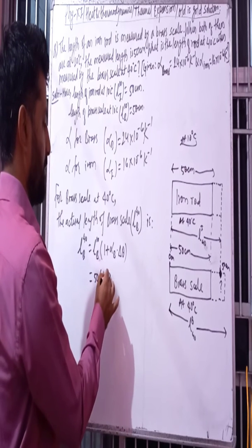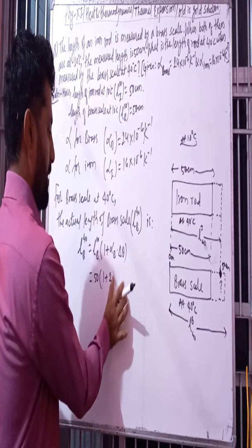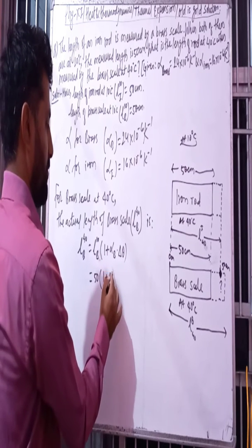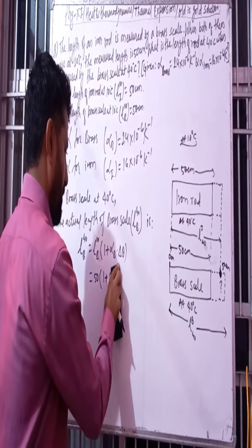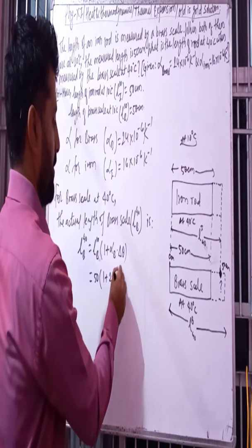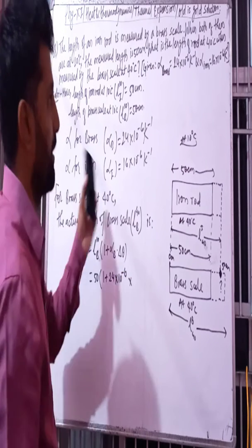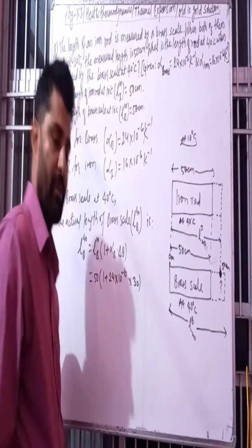Alpha equals 24 into 10 to the power minus 6, into the change in temperature. Initial temperature is 10 degrees centigrade, final is 40 degrees centigrade, so the temperature rise is 30 degrees centigrade.